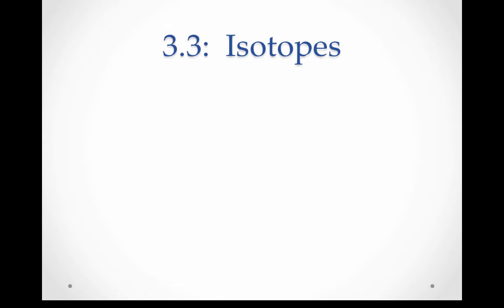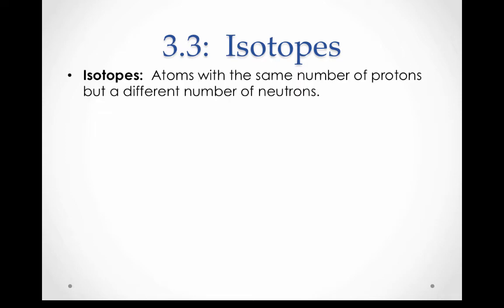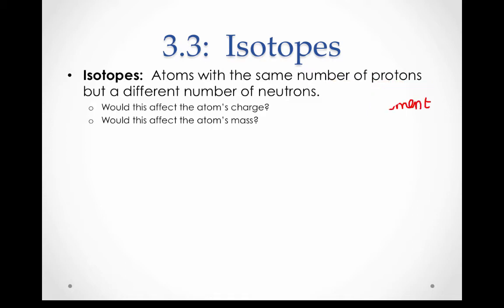Moving on now to isotopes. So far, we've only changed things outside of the nucleus. But it is possible to have some differences within the nucleus of an atom. Isotopes are atoms with the same number of protons but a different number of neutrons. Because they have the same number of protons, they are the same element — because protons determine what element we have. The only thing that is different is the number of neutrons.